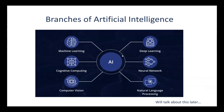Now let's see the branches of AI. These are the branches: machine learning, deep learning, cognitive computing, neural networks, computer vision, and natural language processing. These are the concepts used to achieve artificial intelligence, and we will talk about each in detail later.